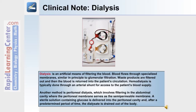Hemodialysis is typically done through an arterial shunt for access to the patient's blood supply. Another method is peritoneal dialysis. This involves filtering in the abdominal cavity where the peritoneal membrane serves as the semipermeable membrane. A sterile solution containing glucose is delivered into the peritoneal cavity and after a predetermined period of time, the dialysate is drained out of the body.